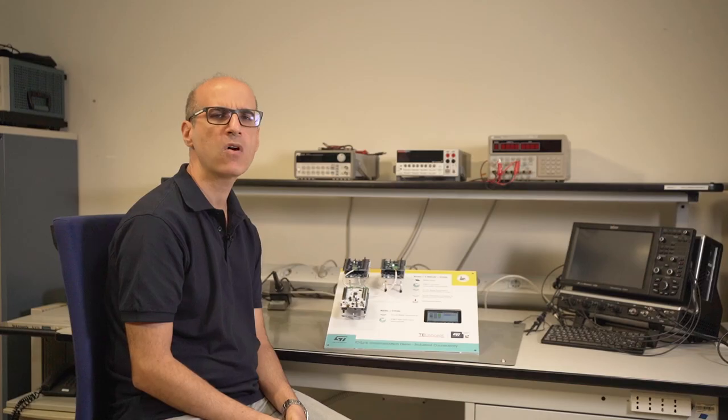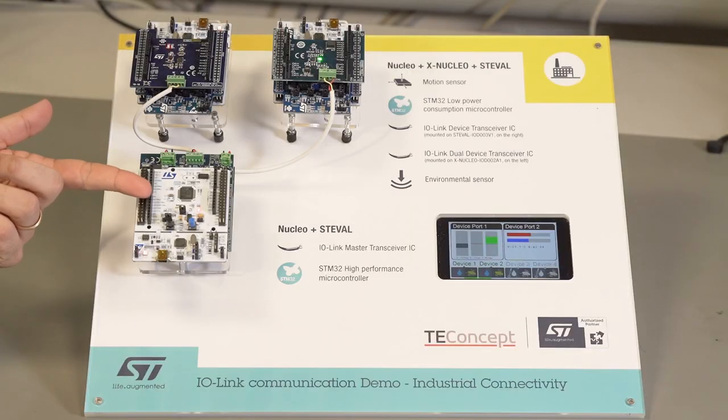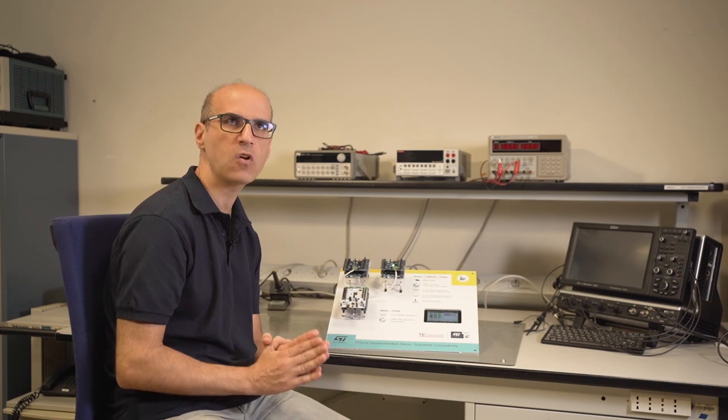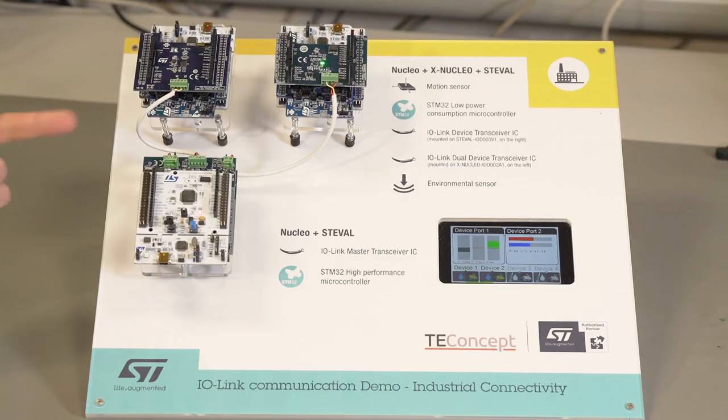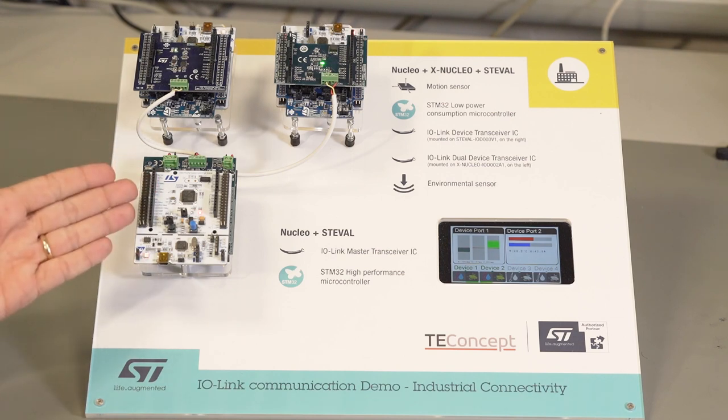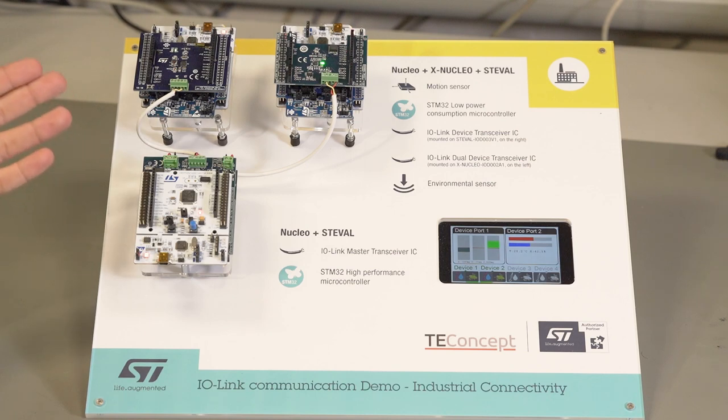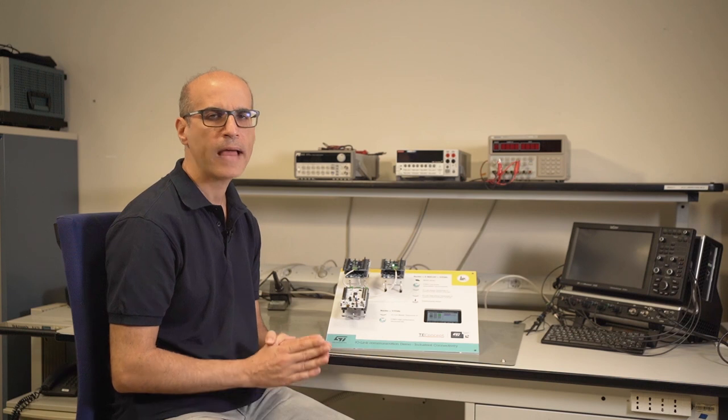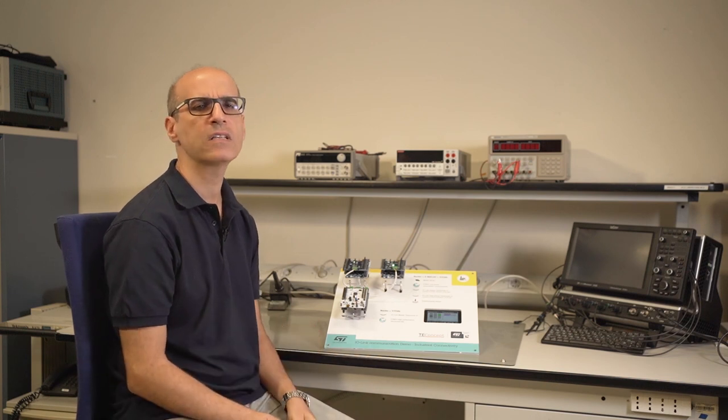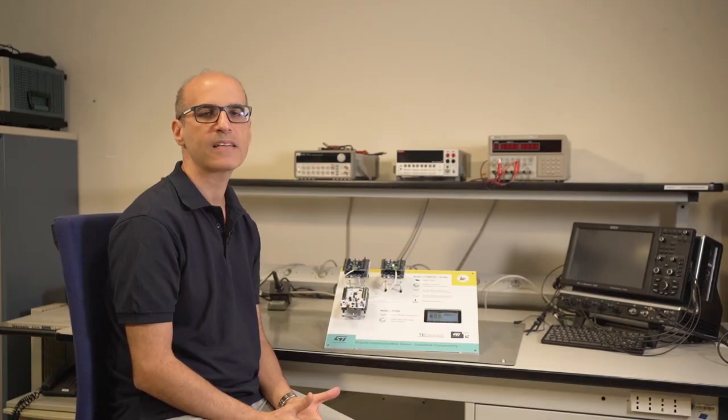The PNucleo IOM01M1 is an IO-Link master kit composed of a Nucleo F446RE and up to four ST-VAL IOM001V1. The Nucleo F446RE has a STM32446 microcontroller, which runs a version 1.1 IO-Link stack developed by our partner TE-CONCEPT. Each ST-VAL IOM001V1 represents an IO-Link master port based on the L6360, an ST transceiver for IO-Link master applications.